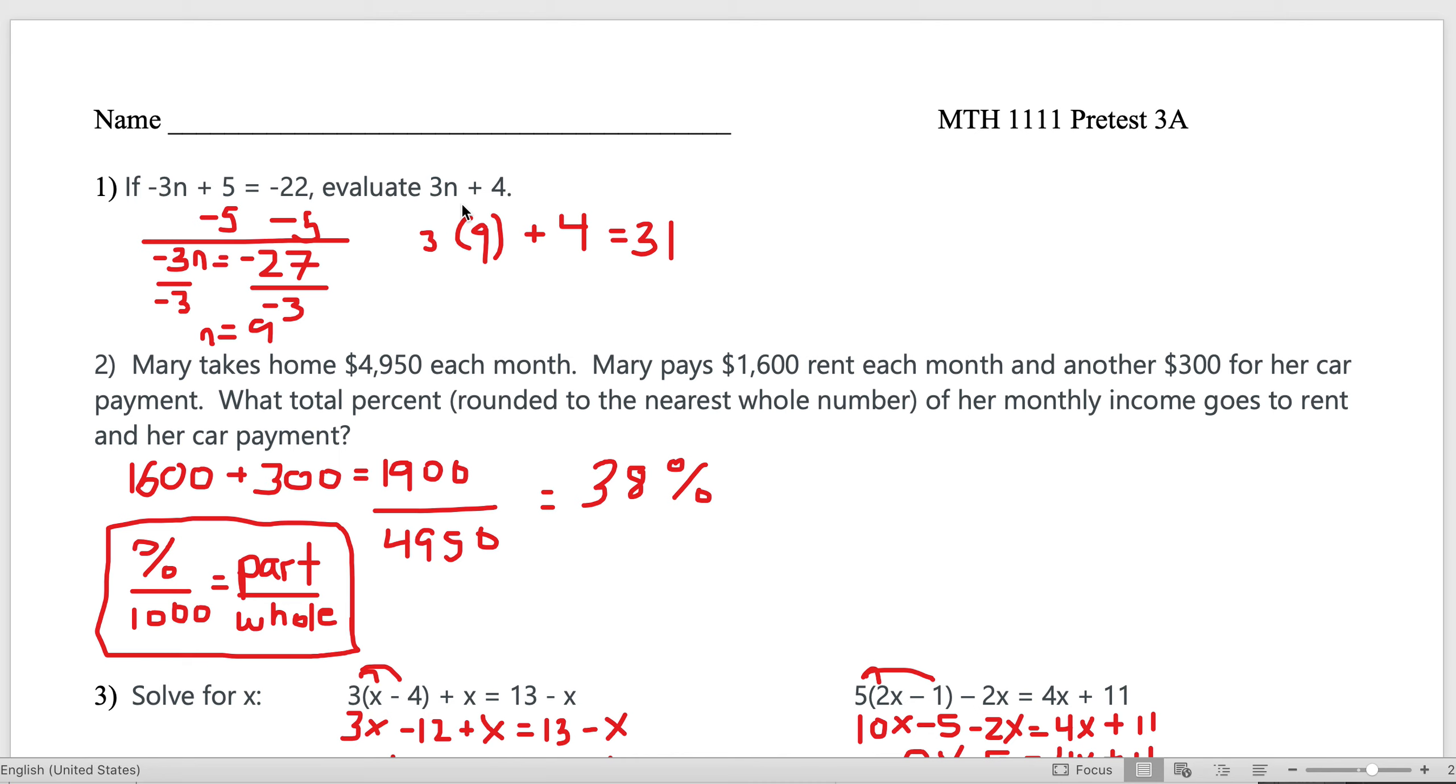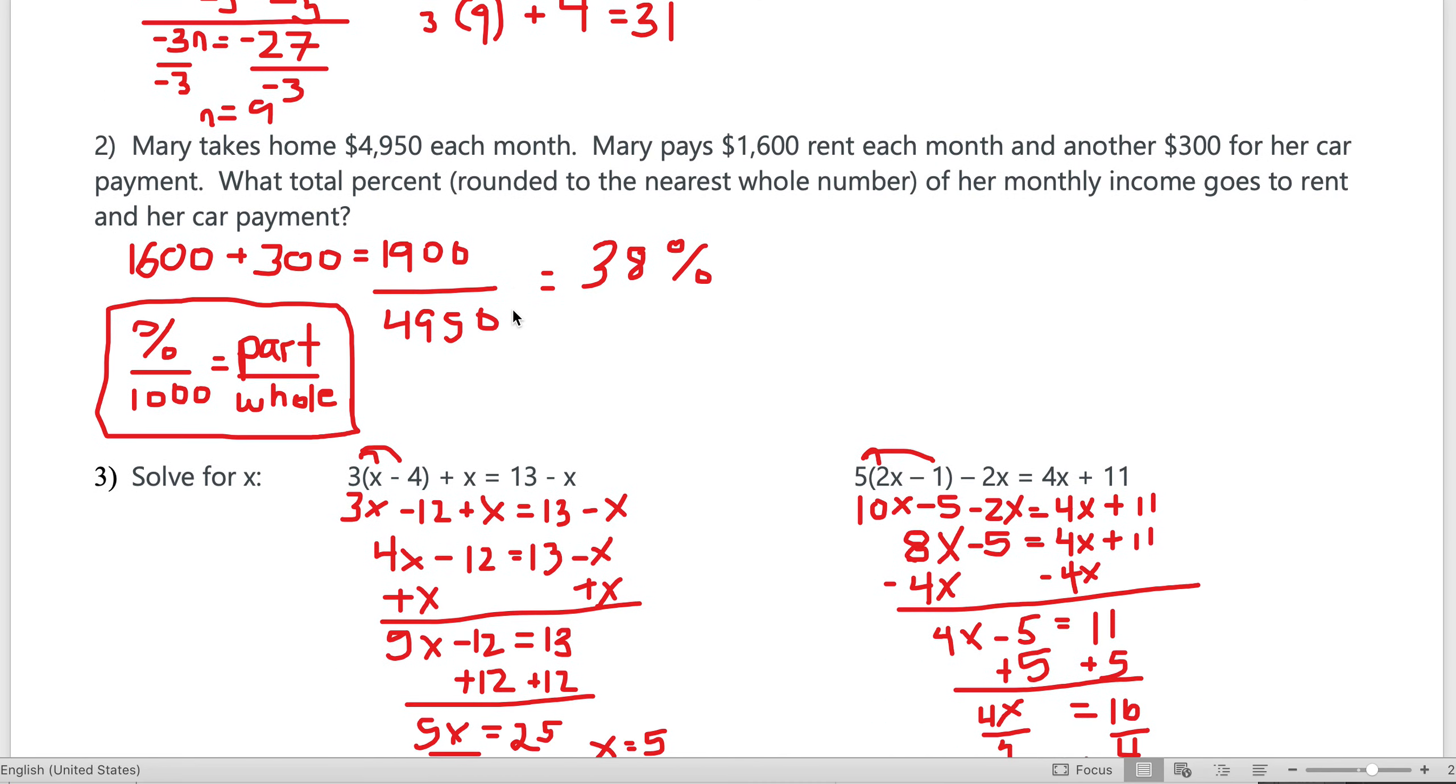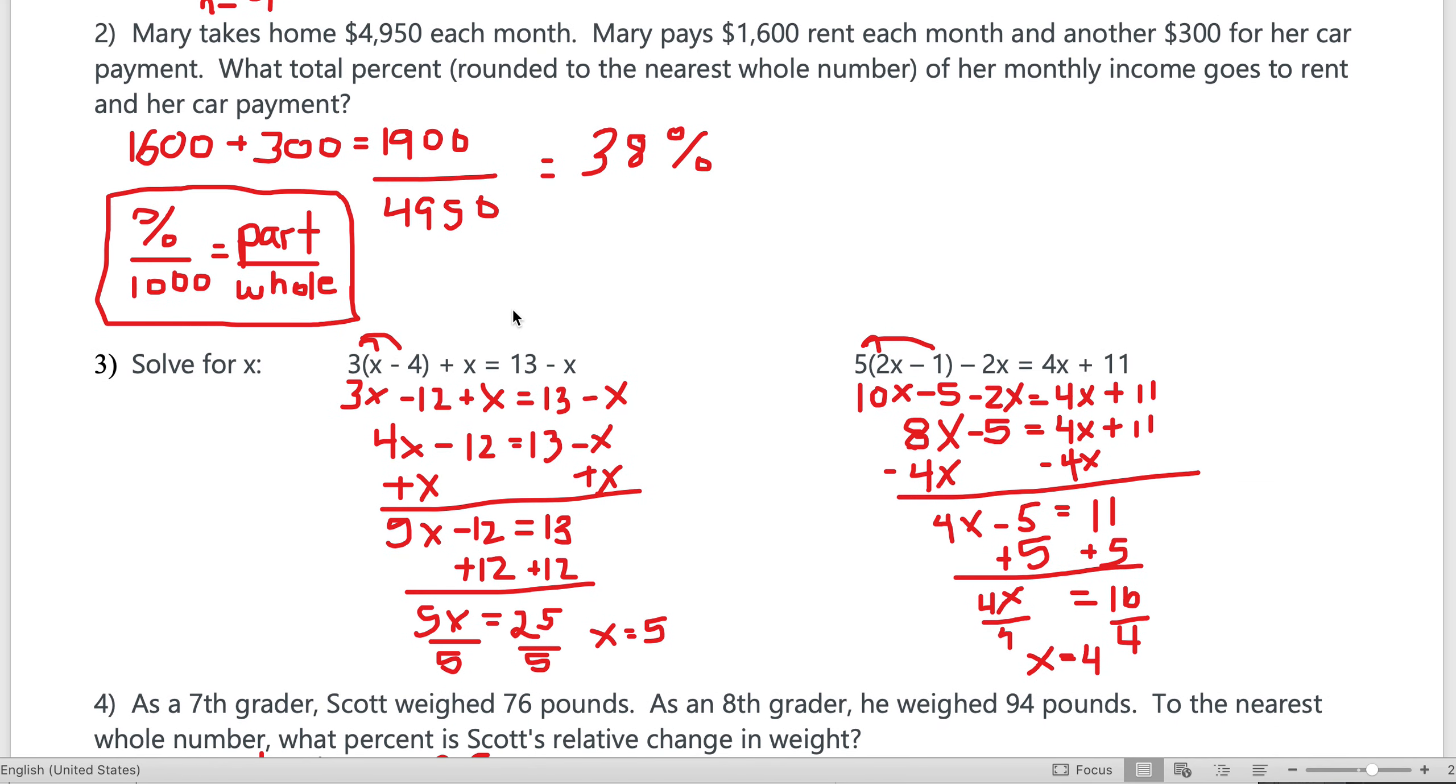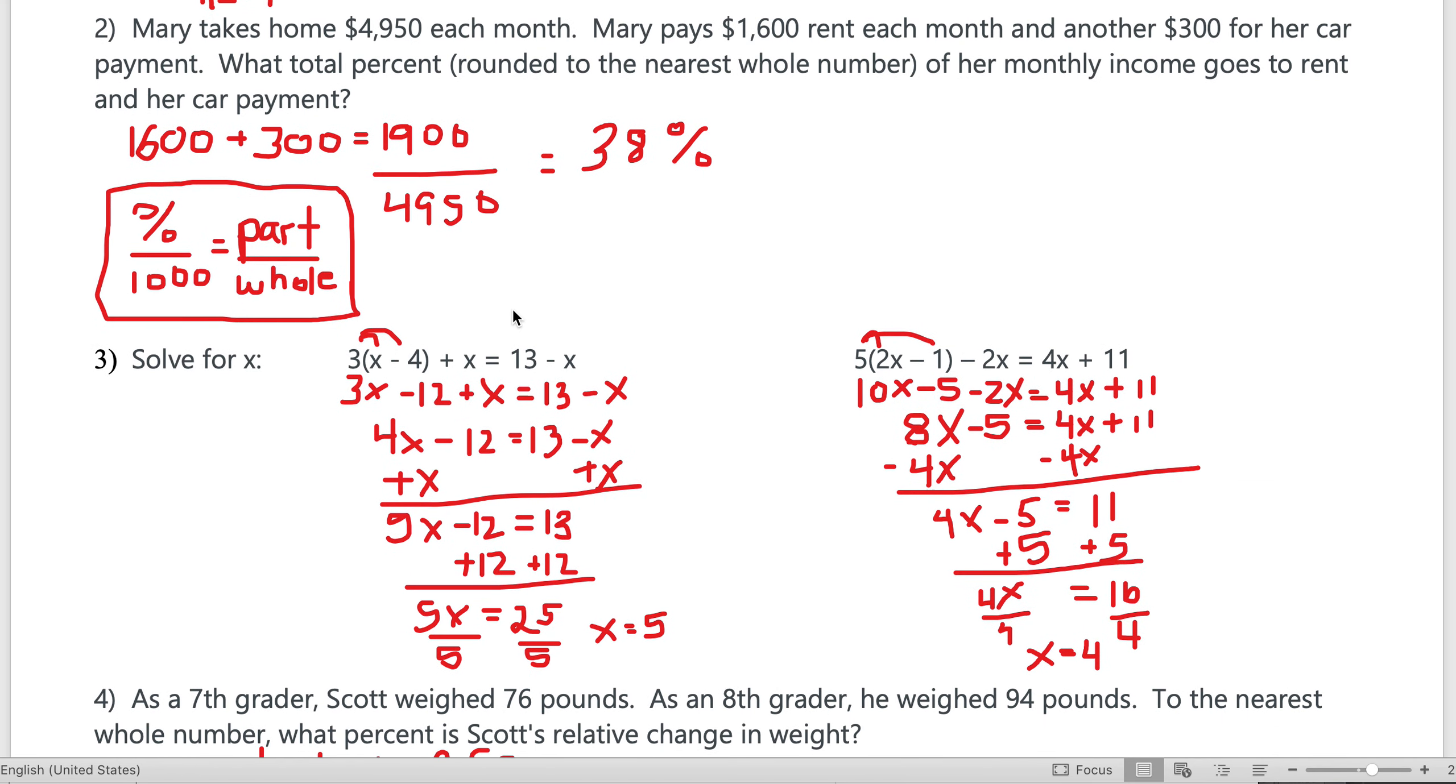They want you to evaluate 3 times 9 plus 4—that's what 3n means. 3 times 9 is 27 plus 4 is 31.